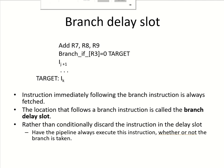Let us discuss the control hazards which happen due to a conditional branch instruction. Here is a conditional branch instruction: branch if R3 is equal to 0 to some target address. When this instruction is fetched, it is decoded and computed — the comparison will take place in the compute stage of this branch instruction.